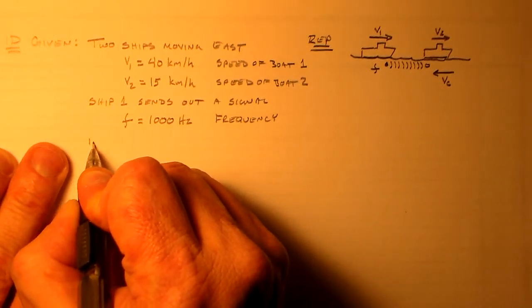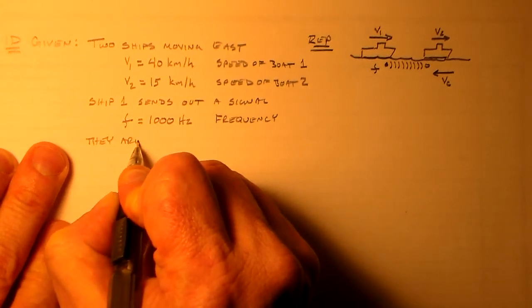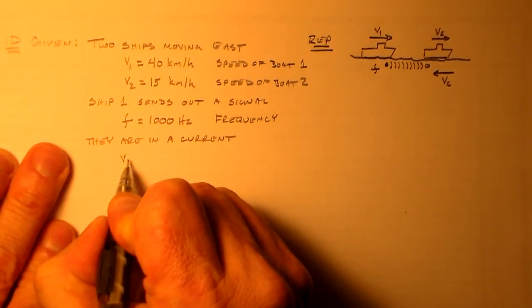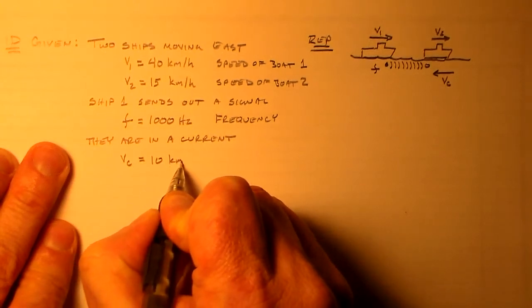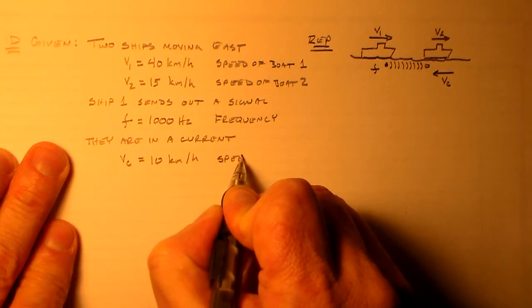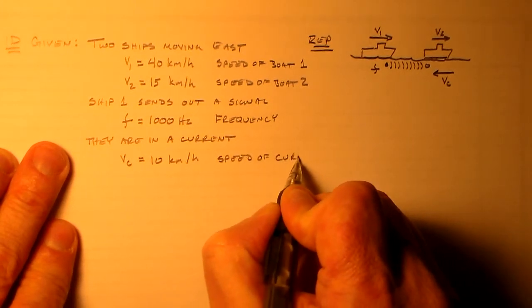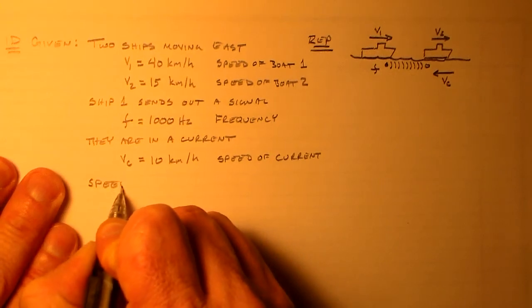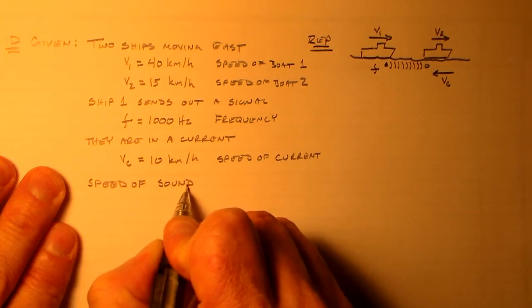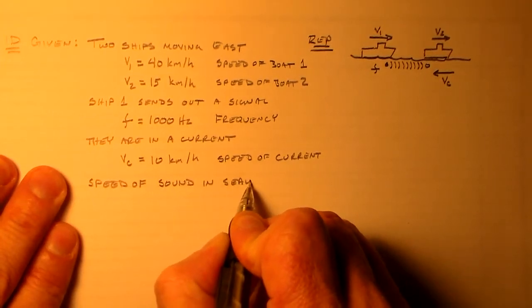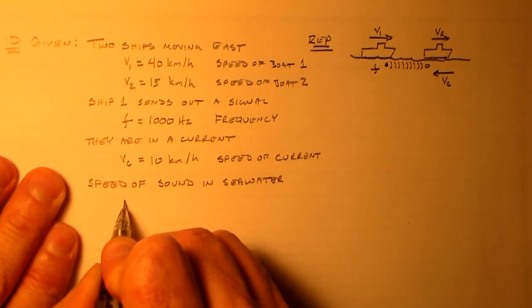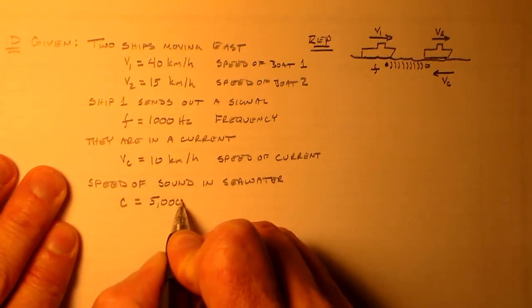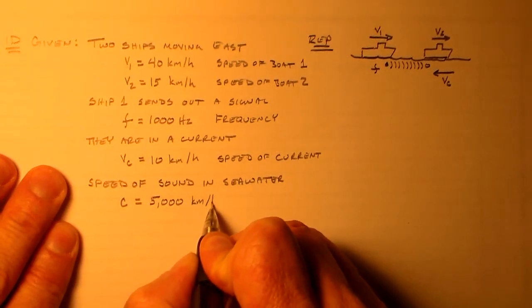And they're in a current. And that current has this speed VC, which is going to be equal to 10 kilometers per hour. So that's the speed of the current. Something we don't have up here that we're going to need is the speed of sound in seawater. Like I said, I don't remember the exact number off the top of my head, but the speed of sound in seawater was something on the order of 5,000 kilometers per hour, I believe. Pretty quick.